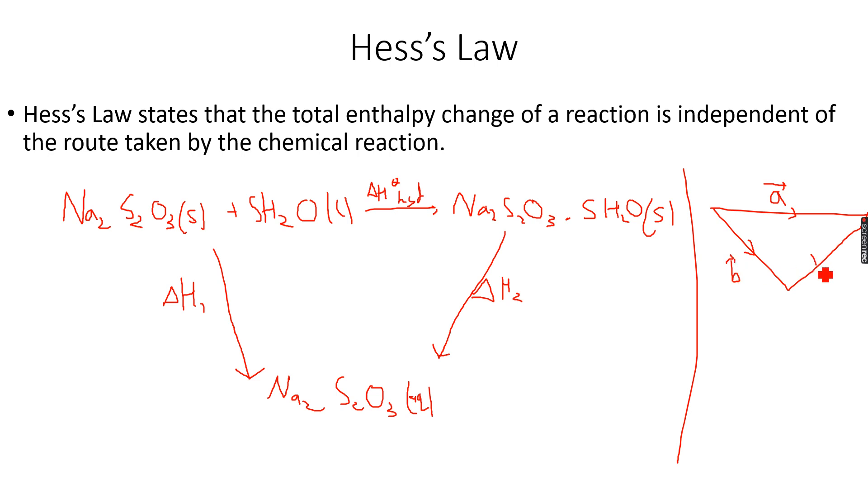We know that b is equal to a plus c, so if you apply this triangle to the cycle over here, then we have to calculate ΔH_hyd. What we will do is make this the subject, so we get ΔH₁ minus ΔH₂.